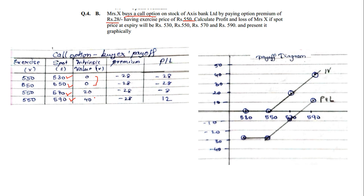When the exercise is 550 and spot is 530, that would be a loss — but we cannot show a loss in intrinsic value, so it remains zero. At equilibrium the value is also zero. It is only when the spot goes above the exercise price that you get positive values: 20 and 40. Since you are buying a call option, the premium will be negative — so negative 28 in all cases. Profit and loss = intrinsic value minus premium: 0−28 = −28, 0−28 = −28, 20−28 = −8, and 40−28 = +12.